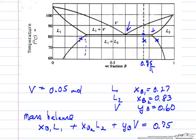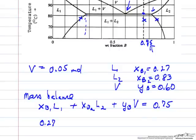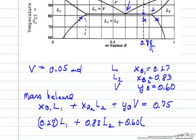We have these numbers that we read. The mole fraction here is 0.27, amount of liquid 1 we don't know. This mole fraction is 0.83. This mole fraction is 0.6, and we do know, we're given this.